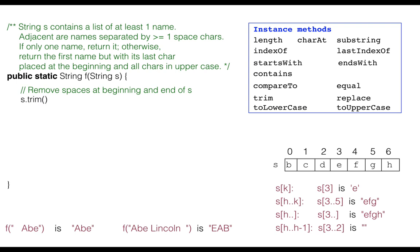But be careful. The call s dot trim does not change s, but produces a new string with the surrounding spaces removed. So we have to assign the result to s.